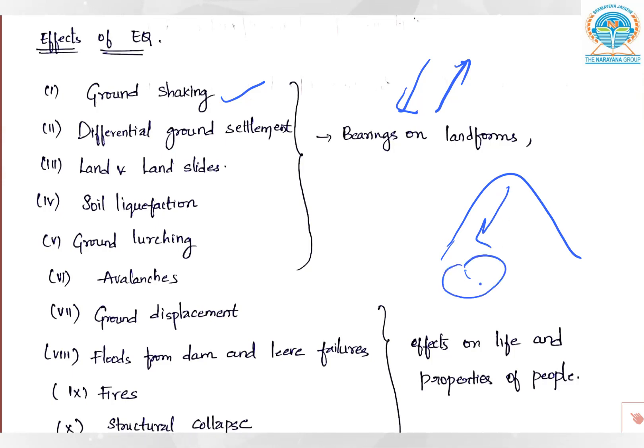It damages people and property on the ground level. Soil liquefaction happens, which is the churning and mixing of soil because of land movement. There is ground lurching, which is suddenly rolling or pitching because of sudden energy release.